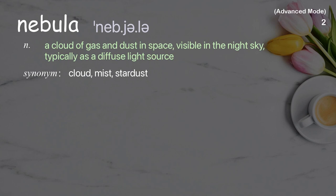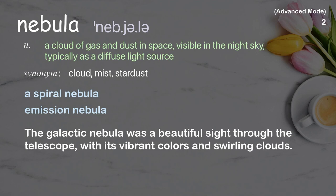Nebula: A cloud of gas and dust in space, visible in the night sky, typically as a diffuse light source. Examples: A spiral nebula, emission nebula. The galactic nebula was a beautiful sight through the telescope, with its vibrant colors and swirling clouds.